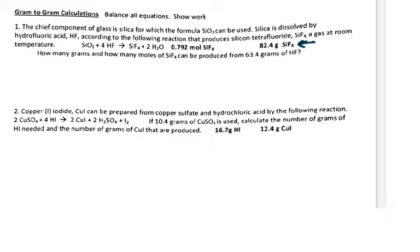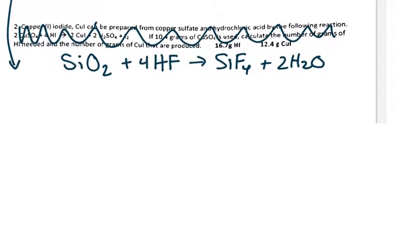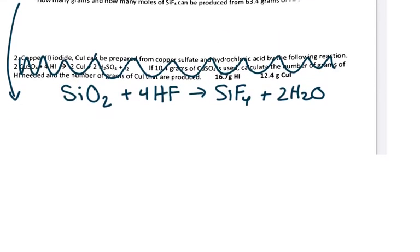And I'm going to actually, down below, you guys can ignore number two. I mean, not ignore it, you can do it, but I'm going to write below it. I'm not doing number two. I'm just doing number one. So I'm going to put the work down here so I have more space. So SiO2 plus 4HF yields SiF4 plus 2H2O.